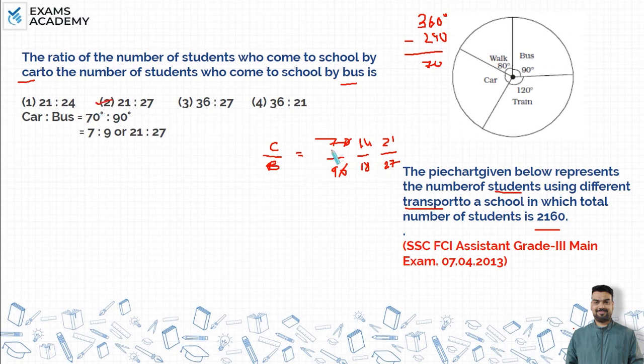If I didn't think about it this way, I could also simplify the options. The car ratio is 7 and bus is 9. If I divide each option's numerator and denominator, which one gives 7 in the numerator and 9 in the denominator? It's option 2.